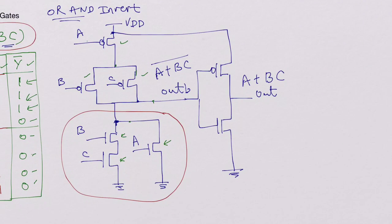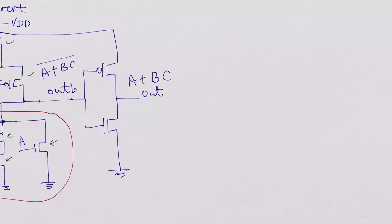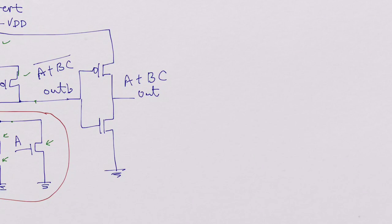You can build, say for example, you could have a function where it is ABC plus DE. So you could have a function like this. So first what we do is realize what is inside this inversion here.